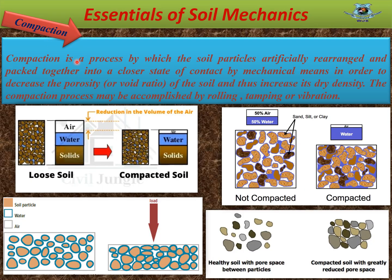Compaction is a process by which the soil particles are artificially rearranged and packed together into a closer state of contact by mechanical means, in order to decrease the porosity of the soil and thus increase its dry density. In the compaction process, normally the volume of air reduces.